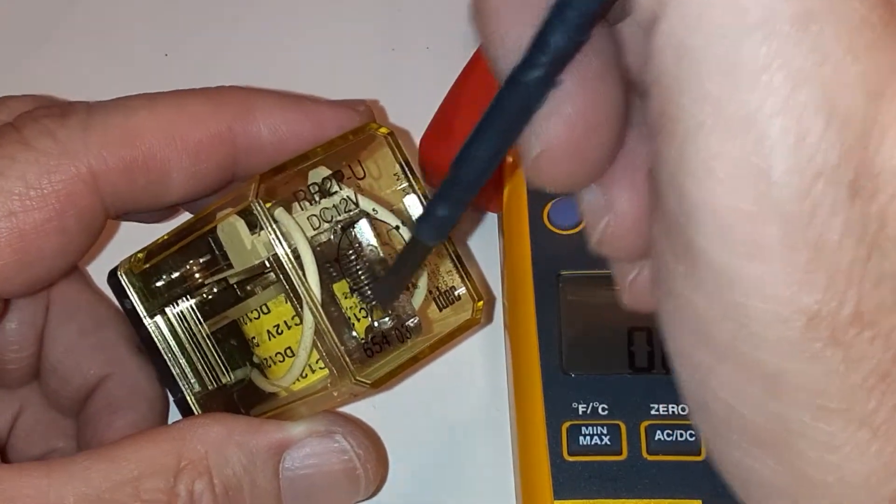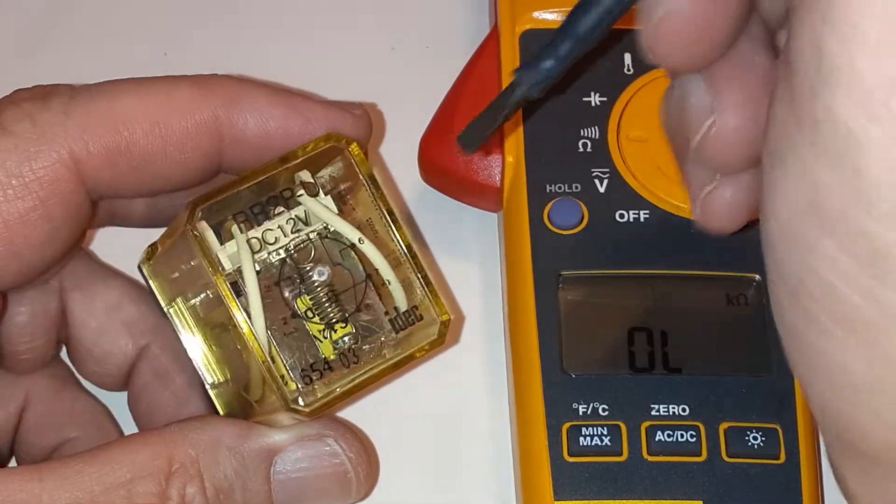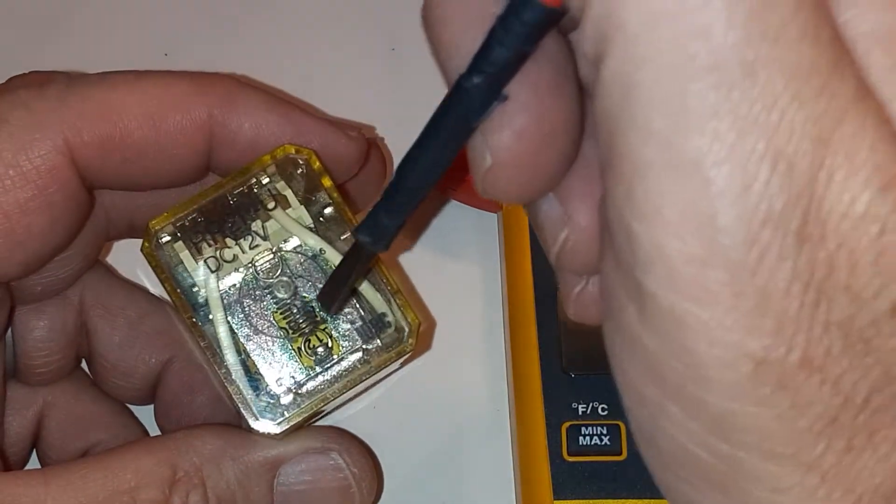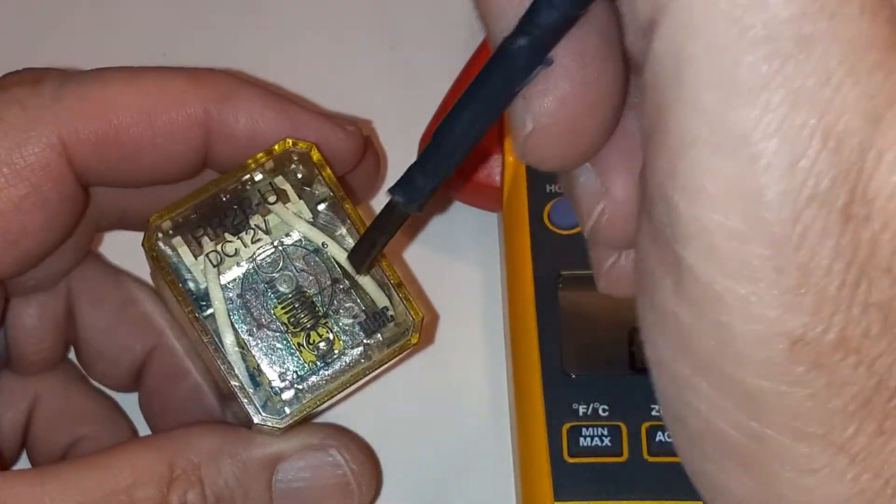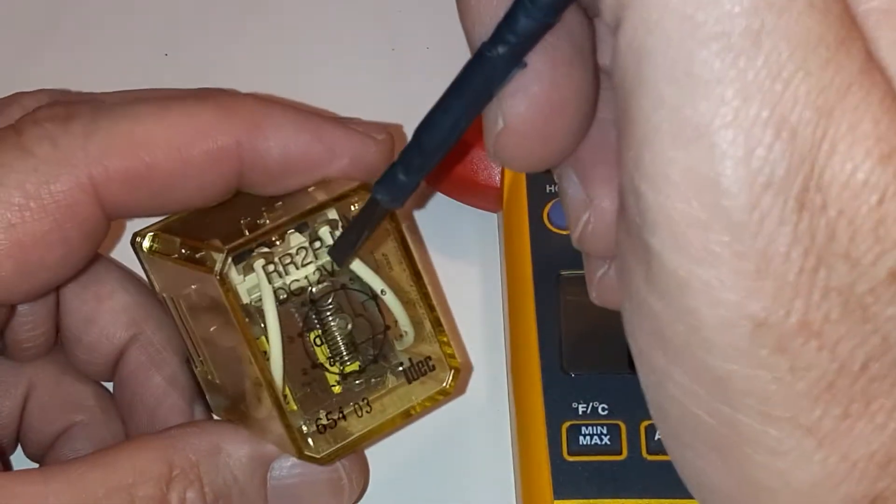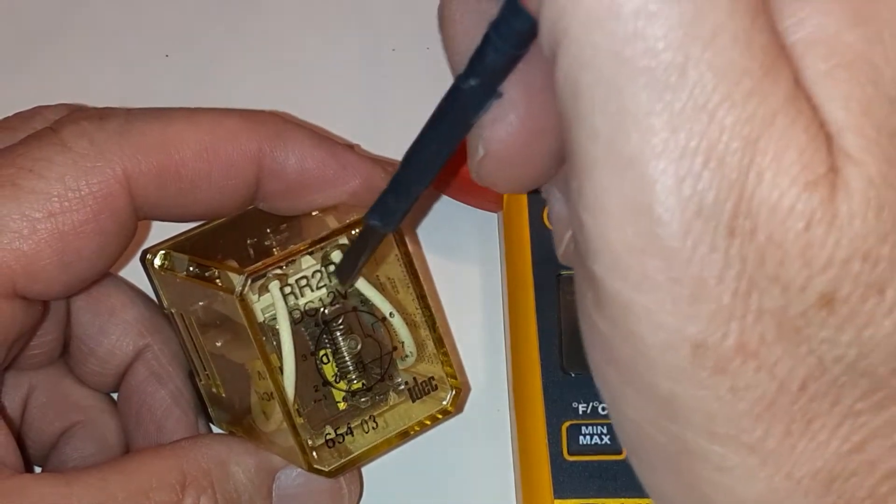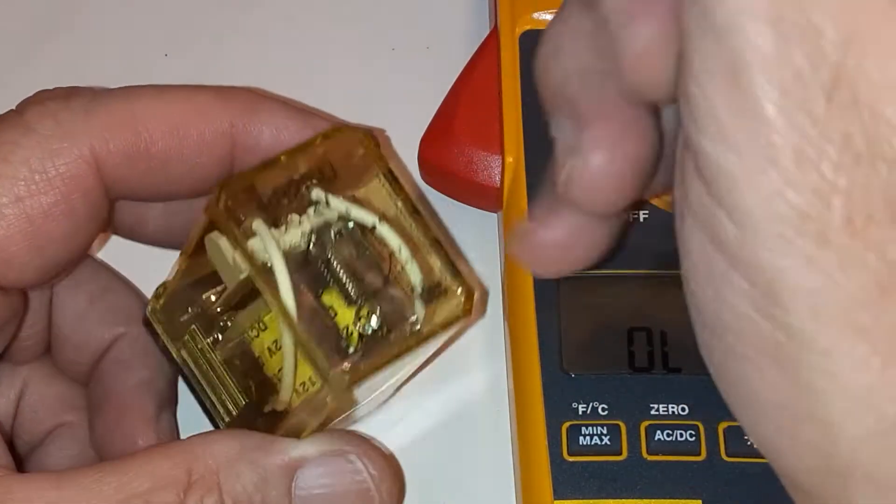The circle represents the relay contacts on the bottom, and you can see right there, there's the coil connection. It's always been difficult to read these things. You can look the part number up - I think I have a link you can click on to get a data sheet for this relay.